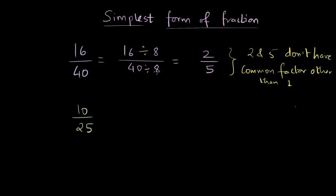If we divide 16 and 40 by 8, we get 2 by 5, and 2 and 5 do not have a common factor other than 1. Therefore, this is the simplest form of the fraction.